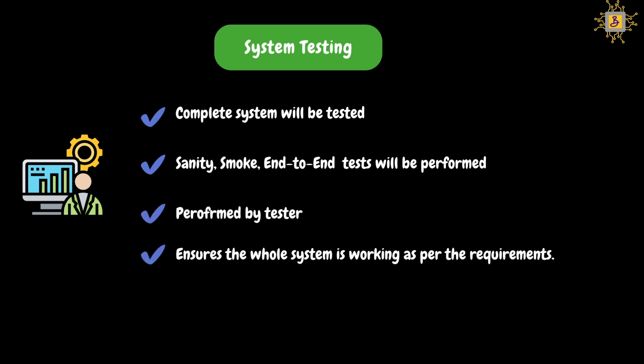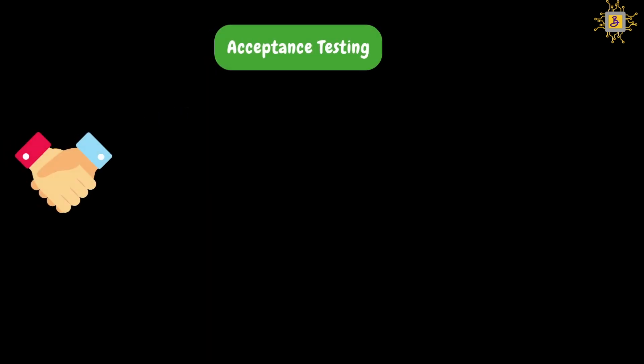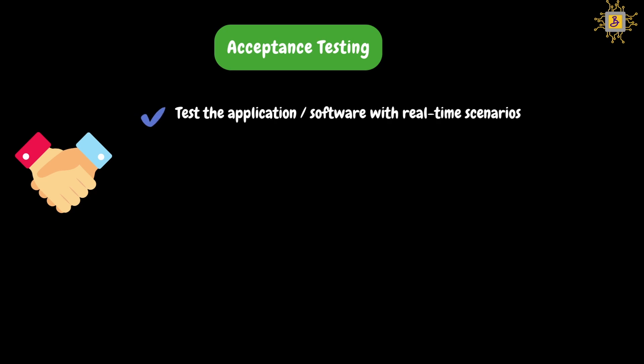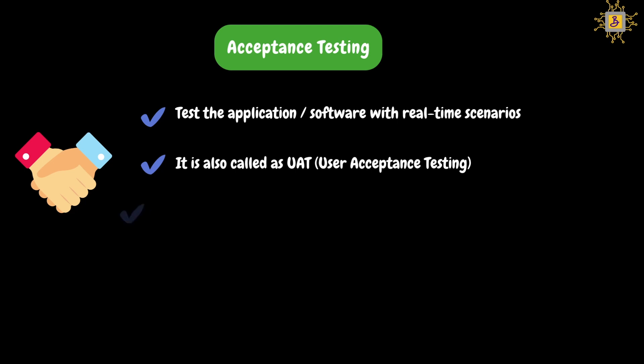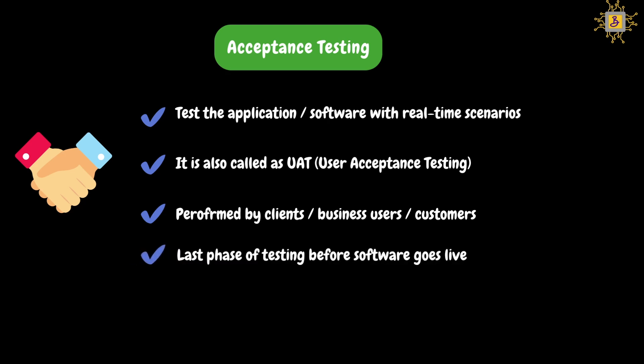Now let's look at acceptance testing. In this type of testing, the application's real-time scenarios will be tested. This is also called UAT — User Acceptance Testing. In general, this testing will be performed by clients, customers, or business users. The clients access the software only when all the features and functionalities are working as expected. This is the last phase of testing before the application goes live or production. Once the application goes live, all the customers will start using the application.